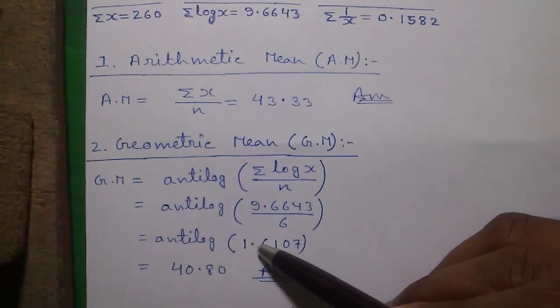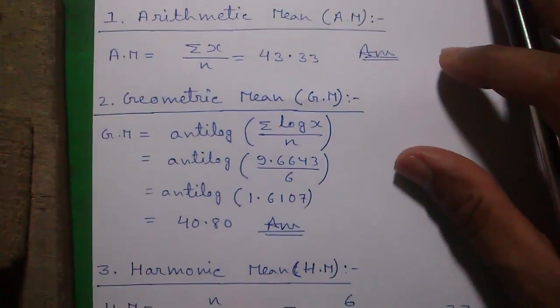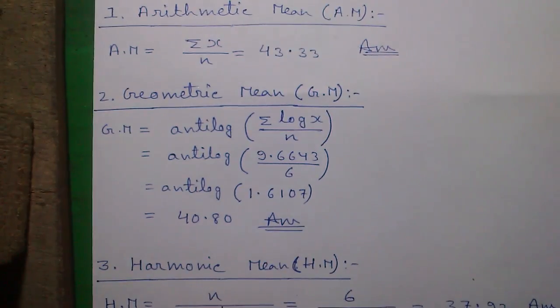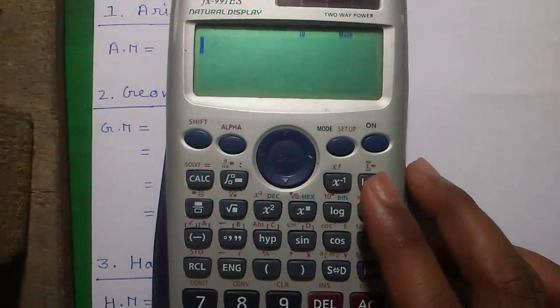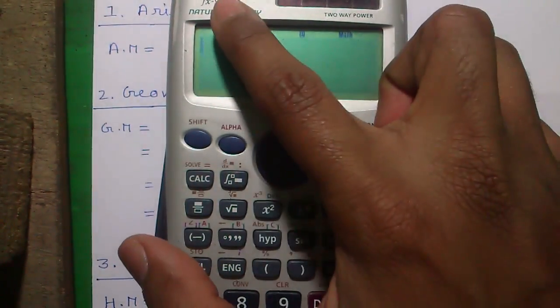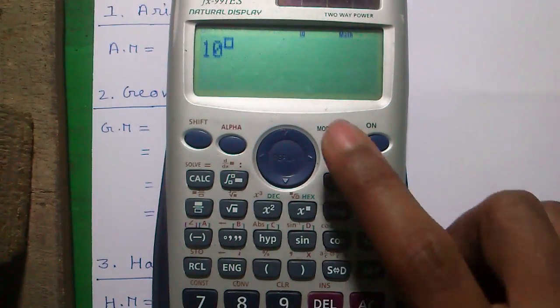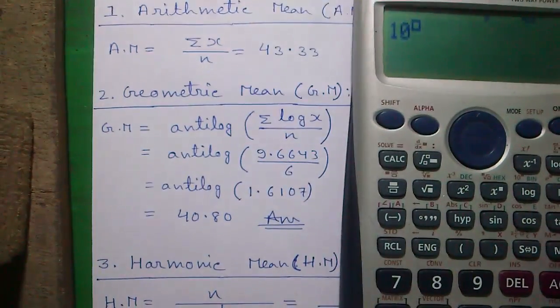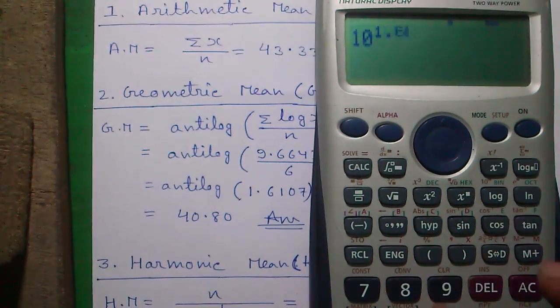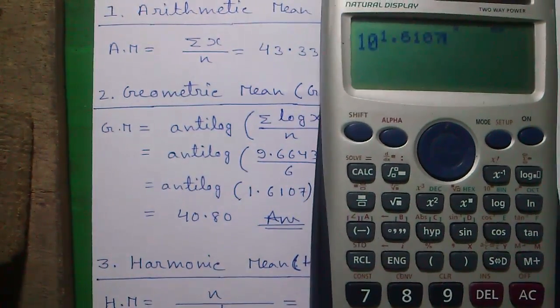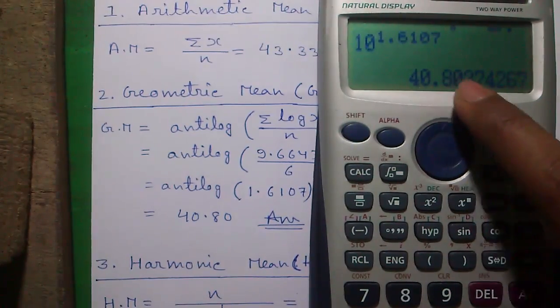To find out anti-log using FX-991 ES calculator, press the shift and the log button, enter the value 1.6107, and press equal to, which is 40.80.